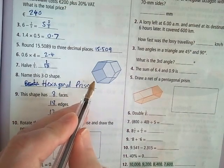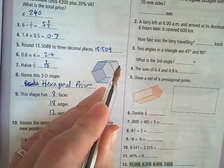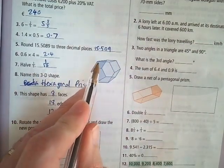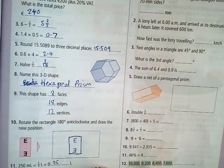There's 18 edges: 6 for one hexagon, 6 for the other hexagon, and then 6 lines joining them up. So 6 plus 6 plus 6 is 18. And 12 vertices: 6 points in this hexagon and 6 points in the far hexagon.